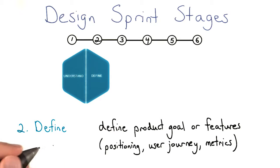In this stage, you might define the goal for the product or certain features. This might include the positioning, a user journey, or metrics related to the product or those certain features. We'll cover more about metrics in lesson four.